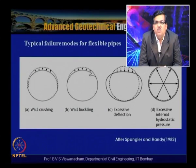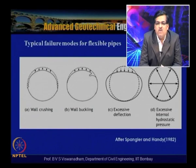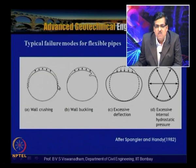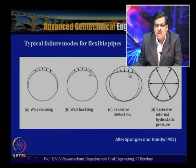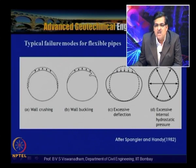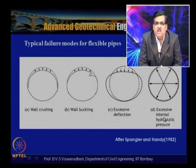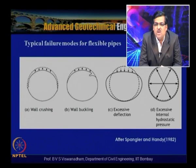The typical failure modes of flexible pipes are shown: wall crushing, wall buckling due to non-uniform stresses, excessive deflection due to inferior pipe material (causing too much decrease in vertical diameter and increase in lateral diameter), and excessive internal hydrostatic pressure — for example, cooling water pipelines at pressures of 5–6 bar — which can lead to pipe bursting.